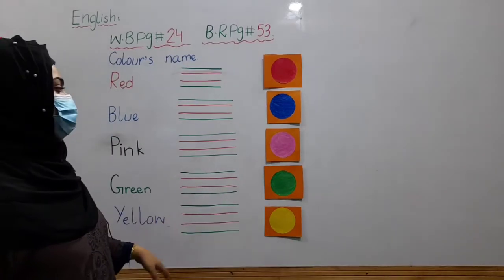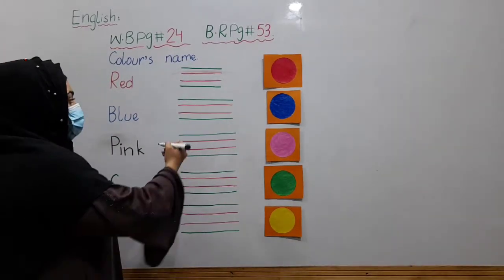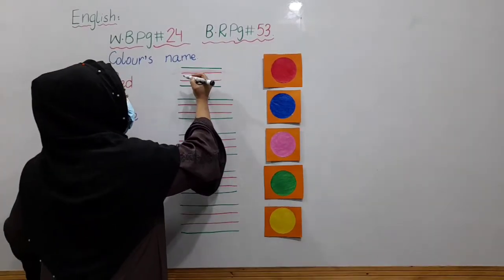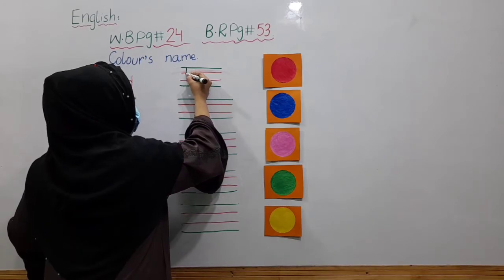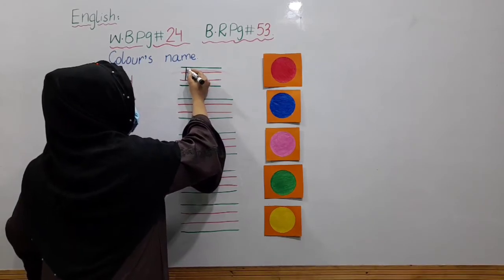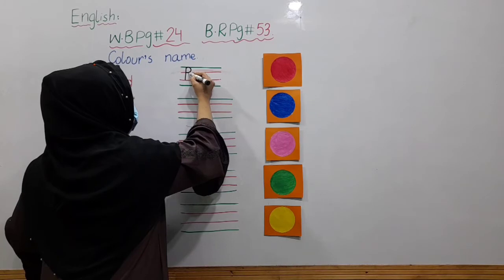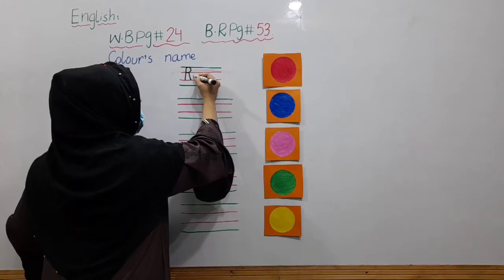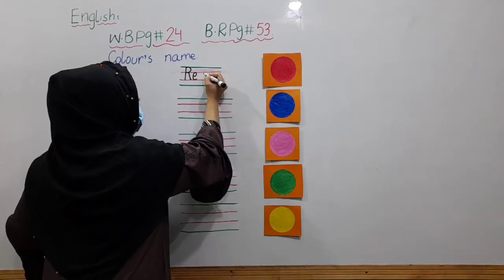Now, we will write these patterns. Okay, write with me, let's spell it. R. First letter will be capital letter. R, E, D.